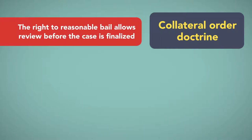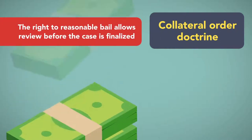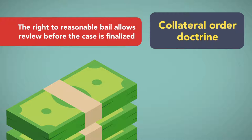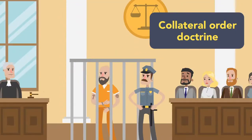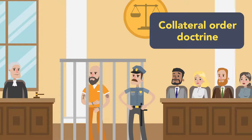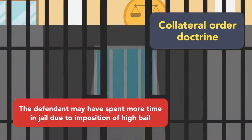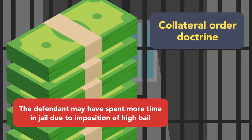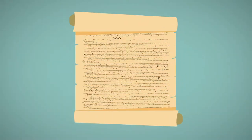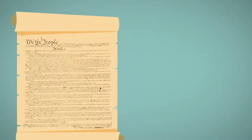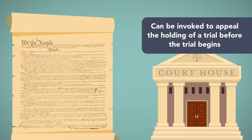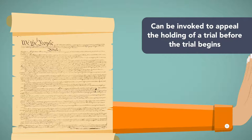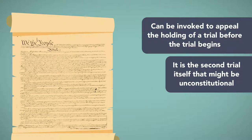For example, the right to reasonable bail allows review before the case is finalized since, by the time the trial is over, the issue of bail is moot, and the defendant may have spent more time in jail due to imposition of high bail. Similarly, the constitutional protection against double jeopardy can be invoked to appeal the holding of a trial before the trial begins, since it is the second trial itself and not necessarily just the verdict that might be unconstitutional.